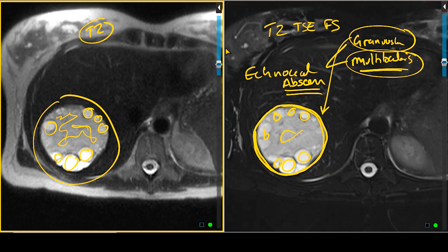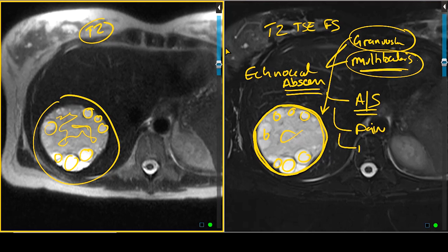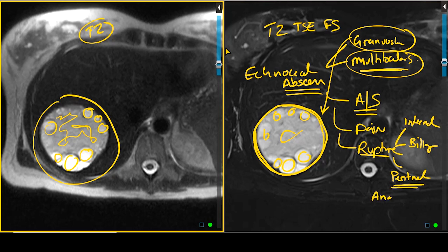Humans are the intermediate host. Humans ingest the larvae into the GI tract, and these get transferred to the liver via the portal vein or through other vessels to the systemic circulation. Initially, patients are often asymptomatic, but as the lesion increases in size, pain can develop. One of the other complications that can occur is rupture — internally without affecting the outer cyst wall, into the biliary tree, or into the peritoneal cavity. When rupture into the peritoneal cavity occurs, the patient is at risk for anaphylaxis.